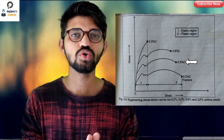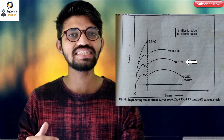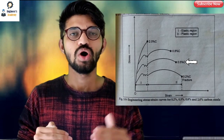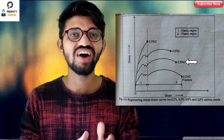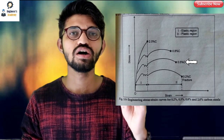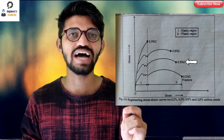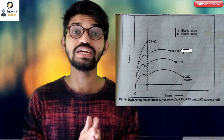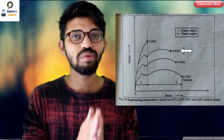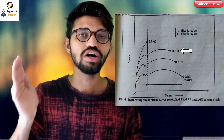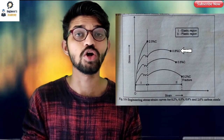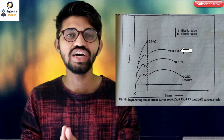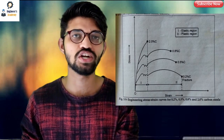Next is 0.5% carbon. This steel shows a percentage elongation comparatively less than 0.2% but comparatively more than 0.8%. Also, in the case of 0.5% carbon, this steel can take higher loads and has higher stress. Moving ahead, next is 0.8% carbon — as the percentage of carbon increases, the stress also increases, but the fracture point moves to the lower side. It can take lower strain, and the deformation is comparatively very less than that of 0.5% and 0.2% carbon.